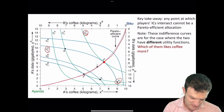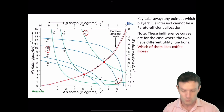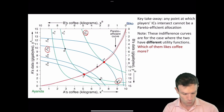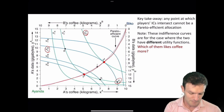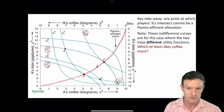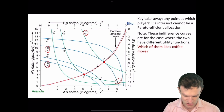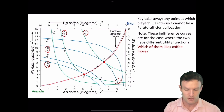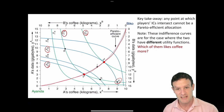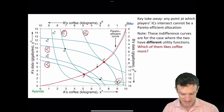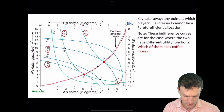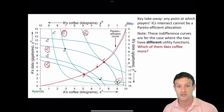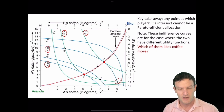Similarly, at TB, Biko's indifference curve UB4 is tangent to Ianda's indifference curve UZA. When the indifference curves are tangent, the marginal rates of substitution are equal.